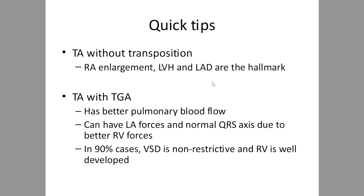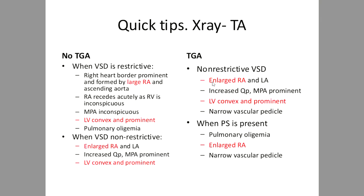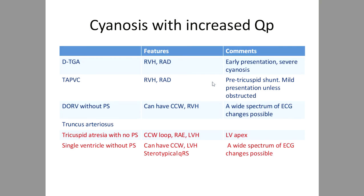Quick tips for tricuspid atresia: broadly classified into with or without transposition. Without transposition: right atrial enlargement, LVH, and marked left axis deviation — RV is more underdeveloped. With transposition, there is typically a non-restrictive VSD and better pulmonary blood flow, so RV is better developed, pulling QRS toward normal. This ECG difference gives a clue about transposition. Summary table: in cyanosis with increased pulmonary blood flow, D-TGA, TAPVC, DORV, truncus, tricuspid atresia, and single ventricle are common differentials. Tricuspid atresia shows counterclockwise loop and LVH; others show RVH pattern. Single ventricle can show LV, RV, or stereotypical QRS.